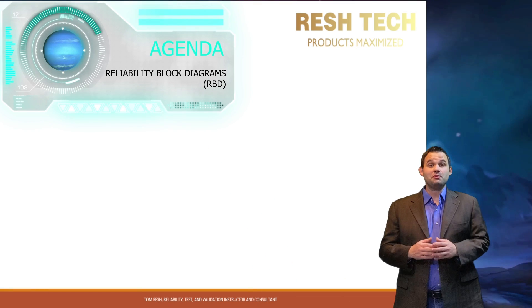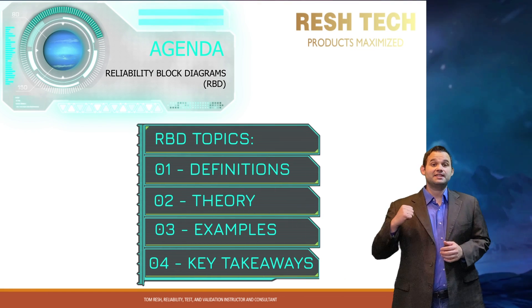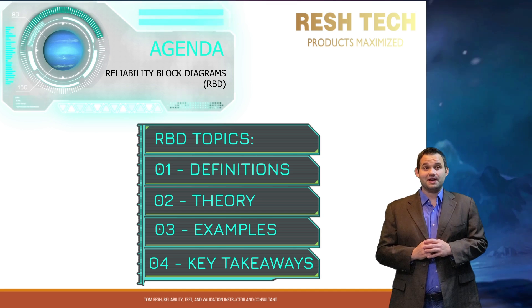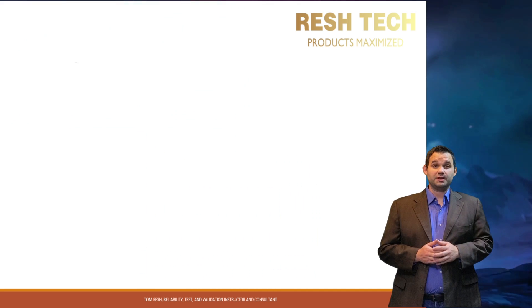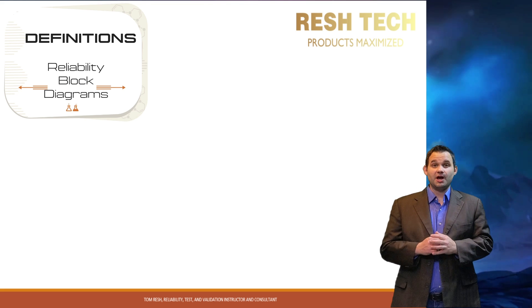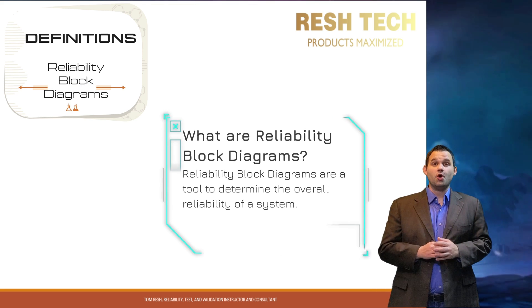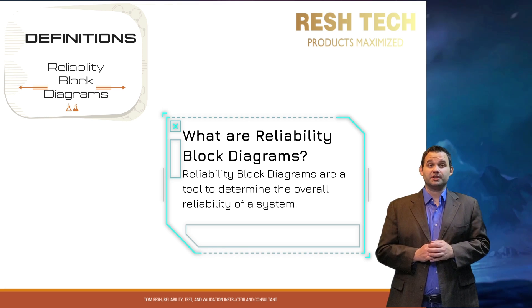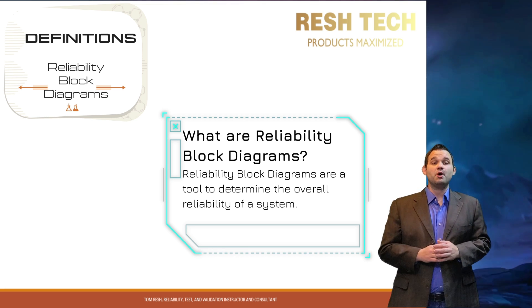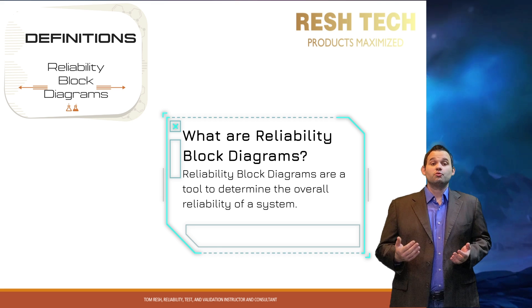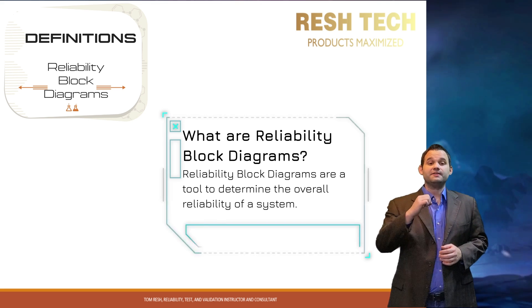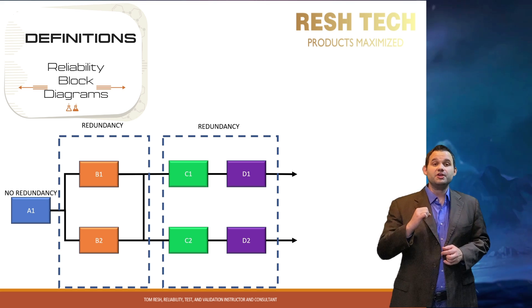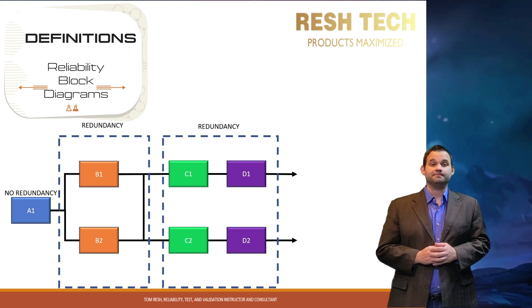In this video we will cover definitions, theory, and examples for reliability block diagrams, and key takeaways from this discussion. So what are reliability block diagrams? Reliability block diagrams are a tool to determine the overall reliability of a system based on the number of series and parallel functions, subsystems, and components within a system.